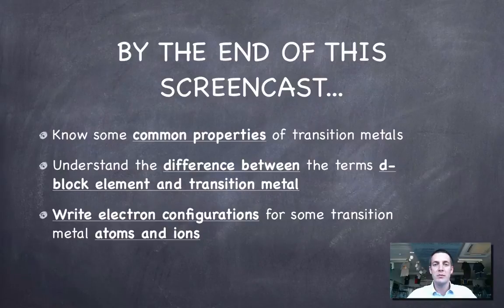You'll understand that there is actually a difference between the two terms d-block element and transition metal and hopefully we'll understand what that difference is. And you'll also be able to write electron configurations for the atoms and ions of these elements, although that is in some ways a bit of a review of what was done earlier in the bonding topic.